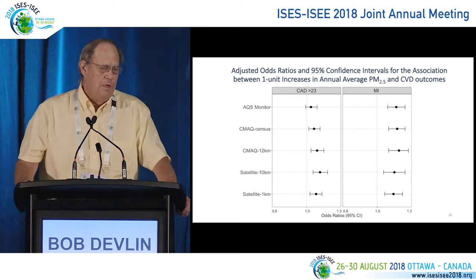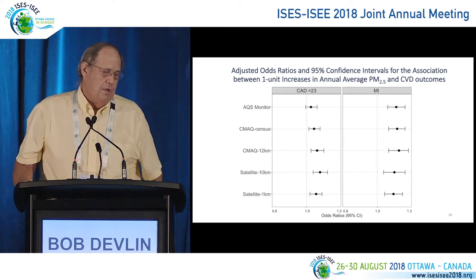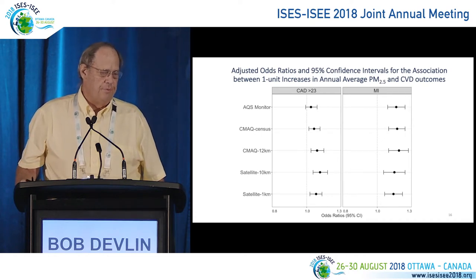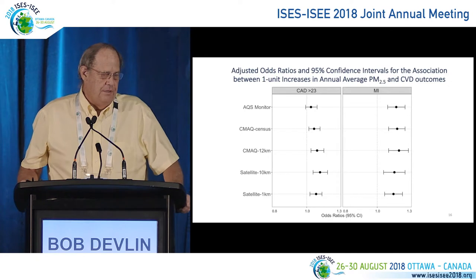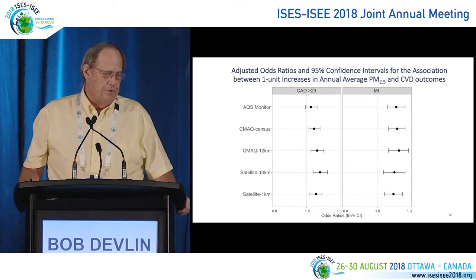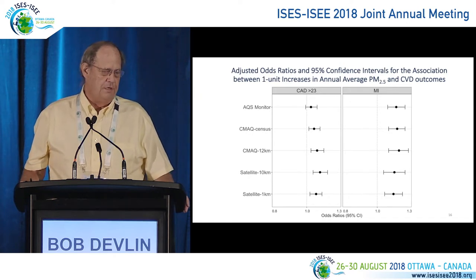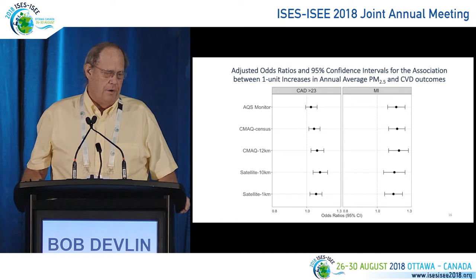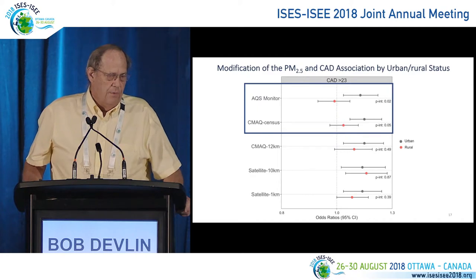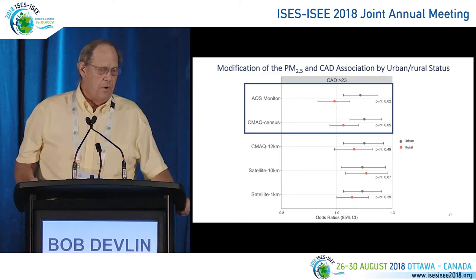Looking at the results for the CAT index — severity of coronary artery disease — there is not a lot of difference across models. The AQS monitor network probably gave the least robust result, but going from 10 kilometer to 1 kilometer on the satellite didn't make much difference, and similarly for the census tract CMAQ versus the 12 kilometer model. Spatial resolution did not show a large difference either in the CAT index or in myocardial infarction; the effects were pretty much comparable across models.